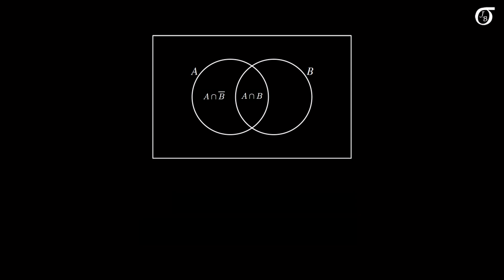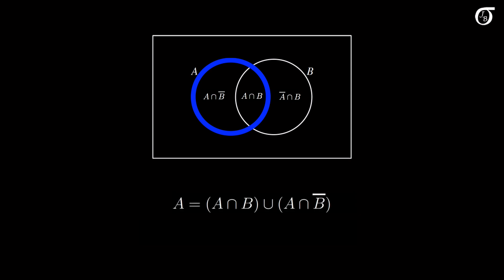The part of A outside that intersection is the intersection of A and B complement — in other words, the intersection of A with everything outside of B. Similarly, the region that is just B is the intersection of B with A complement. If we isolate A, we see that A is made up of two regions: its intersection with B and its intersection with B complement. So event A is the union of those two regions, and since those two regions are mutually exclusive, the probability of A is the sum of their probabilities — the probability of A intersect B plus the probability of A intersect B complement.